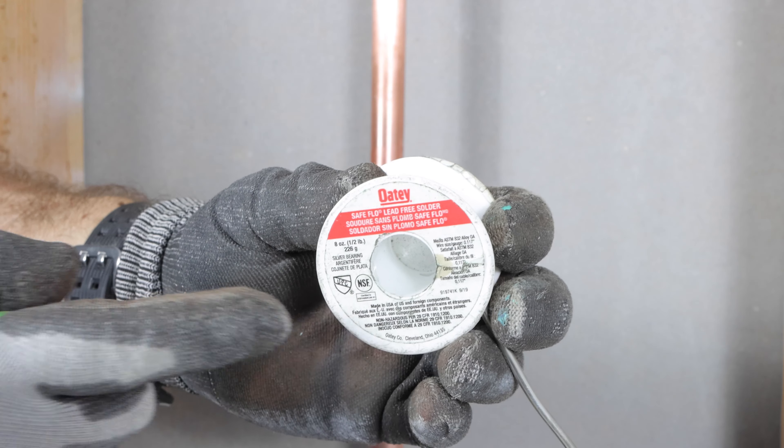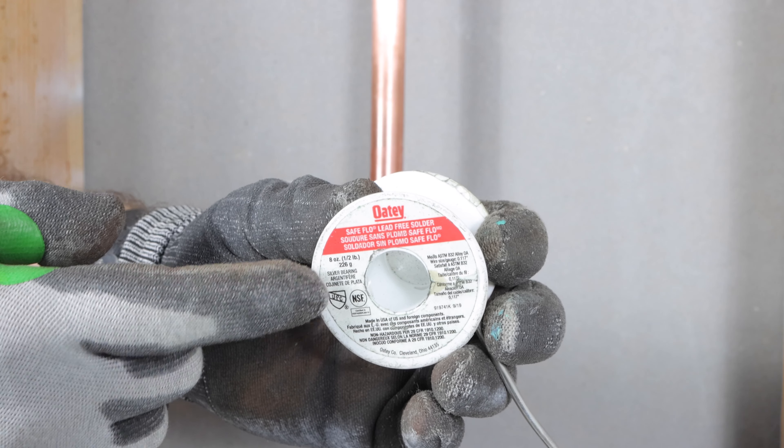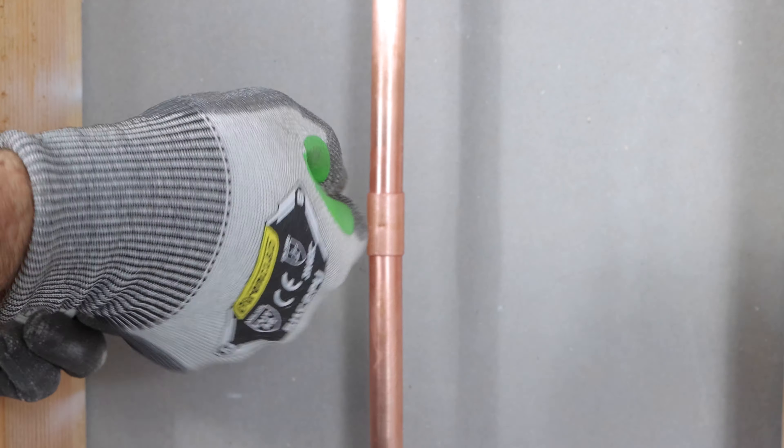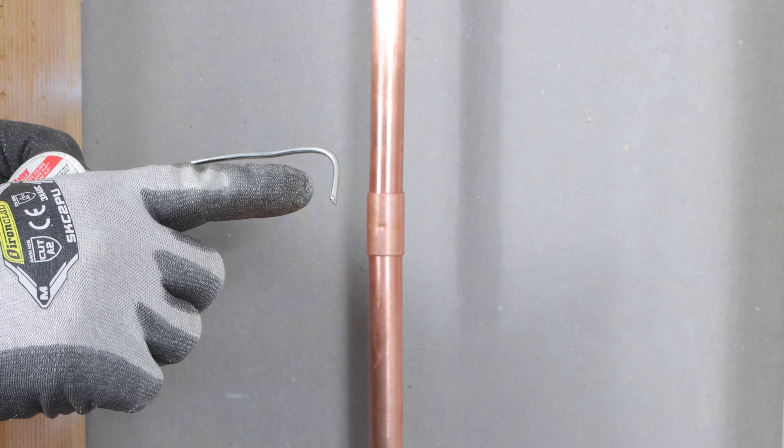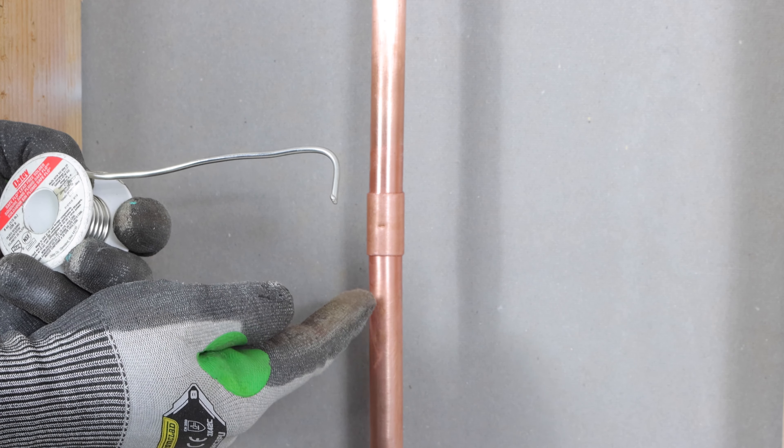The next step is to use Odie Safe Flow Lead-Free Solder. You can get this at pretty much any home store. Create a little hook on it, like a half-inch hook if you're soldering half-inch pipe.